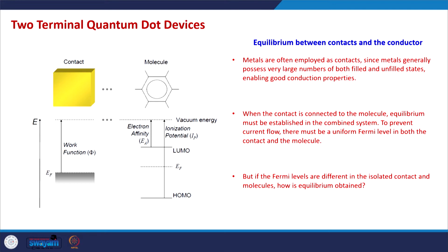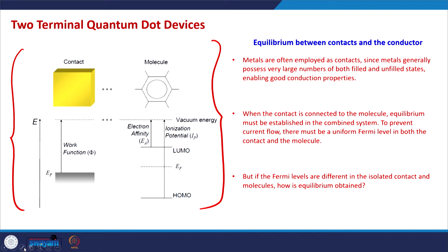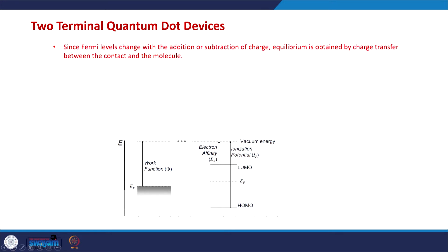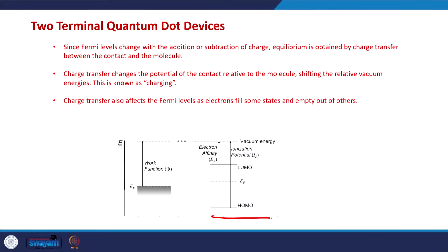This is a two-terminal quantum dot device model. Two phenomena happen in equilibrium: one is known as the charging of the system — the change in the electrostatic charge — and second is the state filling. State filling means that by changing the number of electrons in this molecule the states will be filled or emptied and the Fermi level will be changed. The change in the Fermi level required to achieve equilibrium depends on both state filling and charging.